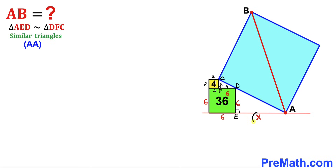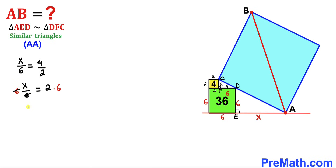Since the triangles are similar, we are going to set up a proportion. The ratio of X to 6 equals the ratio of 4 to 2. Multiplying both sides by 6 to isolate X, the 6's cancel, and therefore our X value turns out to be 12. So our EA length turns out to be 12.